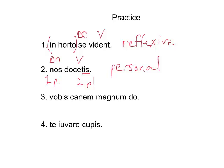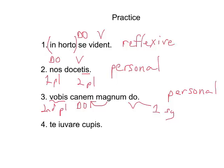Third sentence: 'vobis canem magnum do.' 'Canem' is the direct object, 'magnum' modifies it, 'do' is the verb, and 'vobis' must be dative. But this verb is first singular, and the pronoun 'vobis' is second plural — so it must be personal. 'Vobis' does not refer to the same thing as the subject.